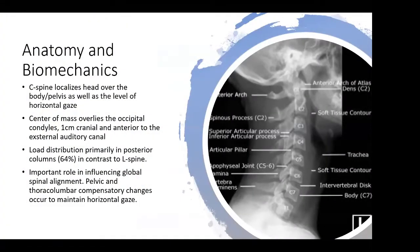For some basic anatomy, the C-spine localizes the head over the body and the pelvis, as well as helps patients maintain horizontal gaze. The center of mass of the head overlies the occipital condyles, and it's one centimeter cranial and anterior to the external auditory canal. Interestingly, load distribution in the cervical spine is about 64% — or two-thirds — in the posterior columns and only one-third in the anterior column. This is in direct contrast to the lumbar spine, which is just the opposite: about two-thirds in the anterior column and one-third in the posterior column. This has biomechanical significance when we talk about approaches to the spine and the posterior ligamentous complex.